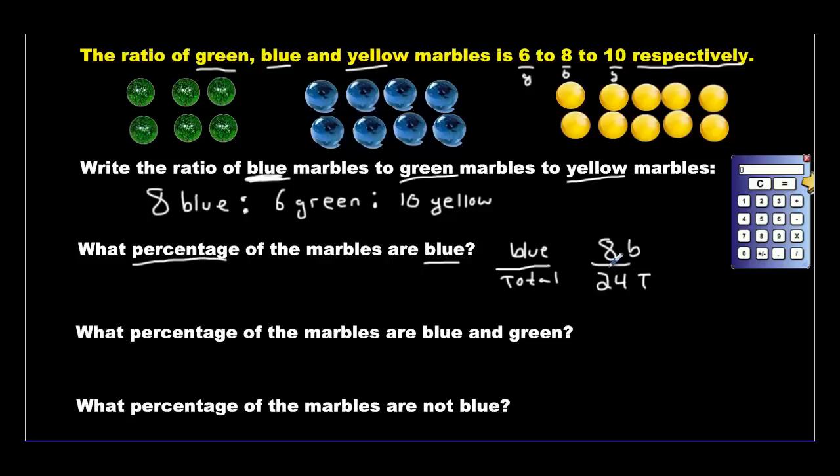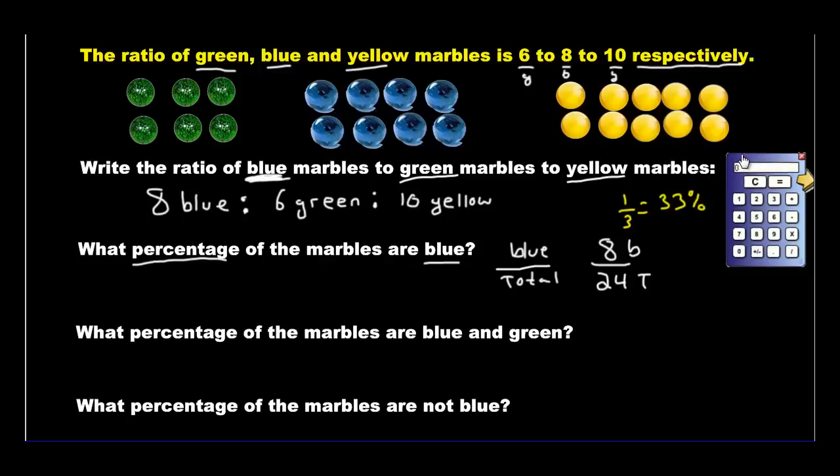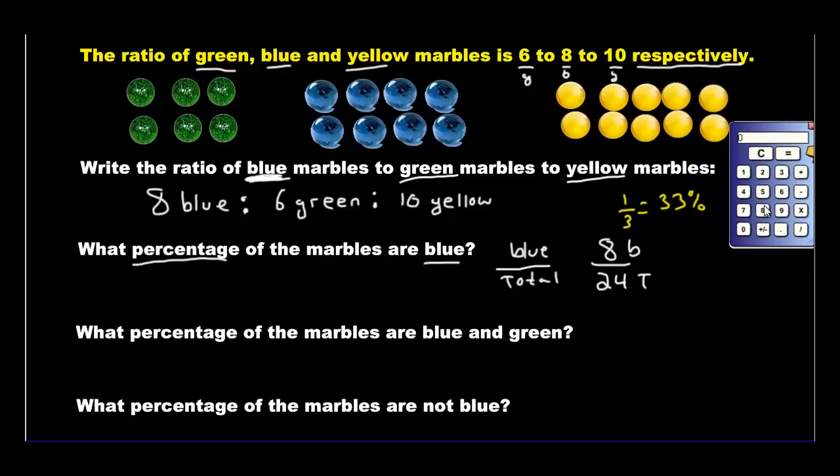Some of you have reduced this in your mind to one-third, and you already know it's 33%. But how would you do it if you didn't realize you could reduce it? You would take your calculator, divide 8 by 24, you'd get 0.33333, and turn that decimal into a percent by moving the decimal twice—multiply it by 100. Two zeros means two bounces, so you get 33%.